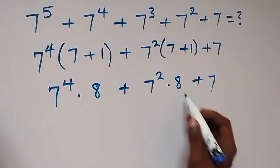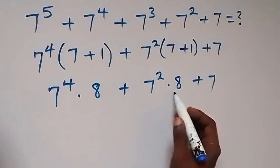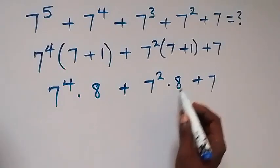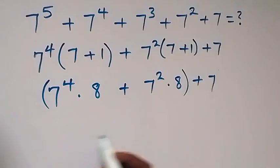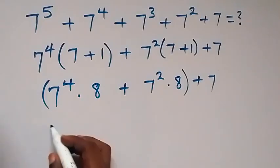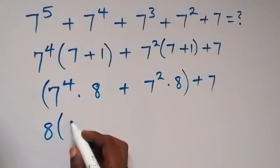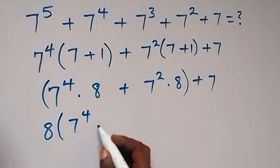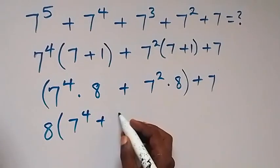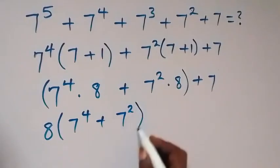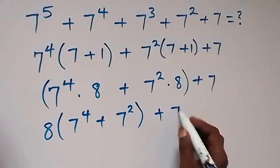When we look at these two numbers, we have 8 in common. When we factor it out, this gives us 8 into bracket: 7 raised to power 4 plus 7 squared, close bracket, plus 7.